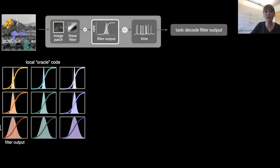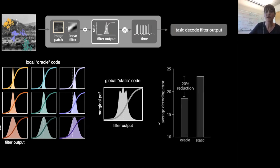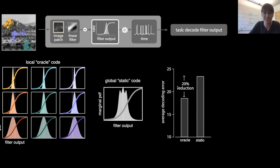We can compare the oracle code to a static code that uses a single fixed nonlinearity matched to the marginal distribution of filter outputs across all nine contexts. Comparing these two codes, the oracle code outperforms the static code by about 20%. This tells us something we already know: it can be advantageous to adapt to the local statistical context, and that adaptation reduces decoding error.